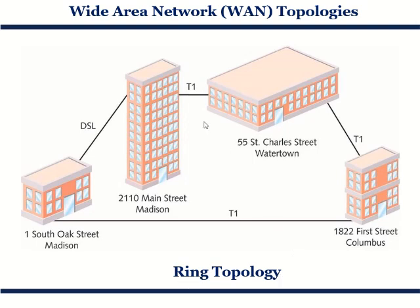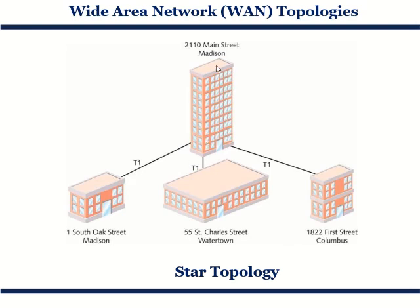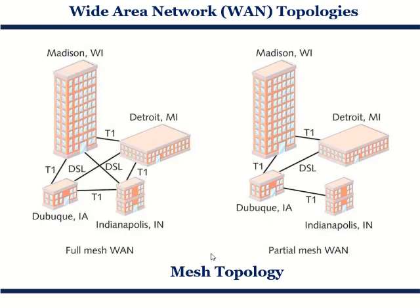In ring topology, all four nodes — T1, T1, T1, and DFL — are connected together in a ring fashion. Similarly, there are other WAN topologies such as star topology, mesh topology, and tiered topology. In a star topology, one main building is connected to the rest. In a full mesh topology, all nodes are interconnected together, while in a partial mesh topology, some connections between buildings are present and some are missing.